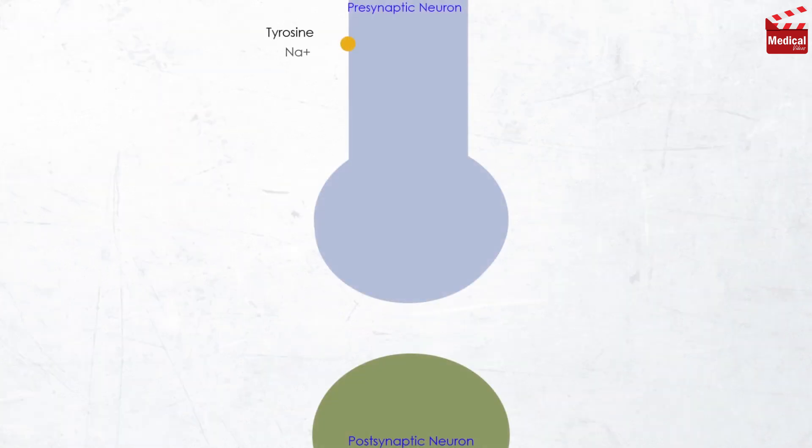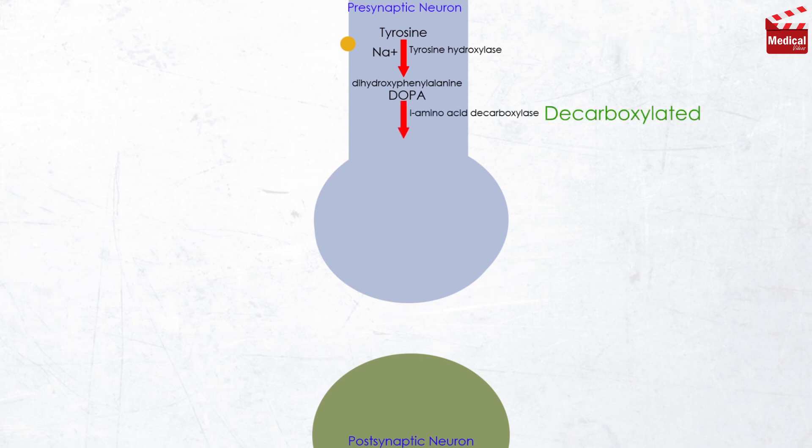Tyrosine is transported by a carrier into the adrenergic neuron, where it is hydroxylated by tyrosine hydroxylase to dihydroxyphenylalanine, or known as DOPA. And this is the rate-limiting step in the formation of norepinephrine. DOPA is then decarboxylated by L-amino acid decarboxylase to form dopamine in the presynaptic neuron.